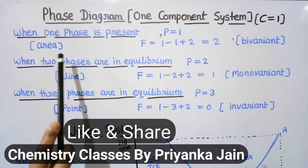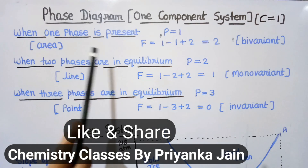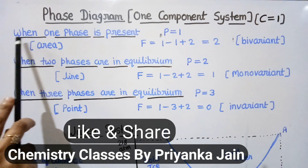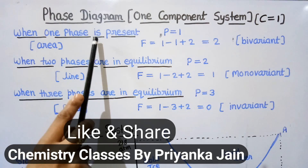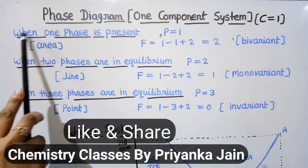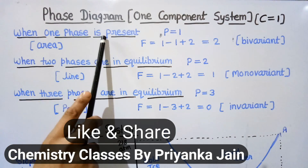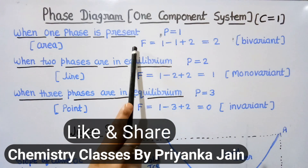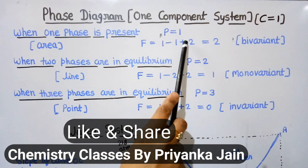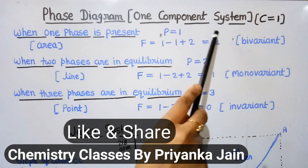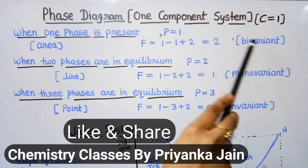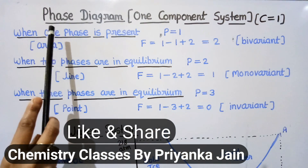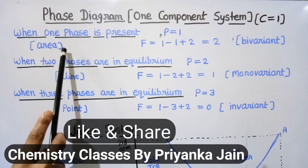We will see here the different phases of a single component system. When only one phase is present, C equals 1 and P equals 1, so the number of degrees of freedom is 1 − 1 + 2 = 2. It means the system is bivariant. Such a bivariant stage is shown by an area in the phase diagram — when a single phase is present, it is represented by an area.